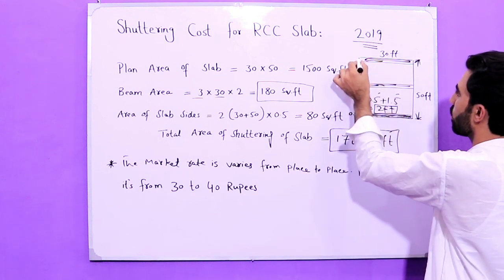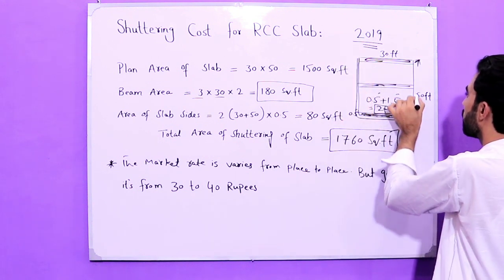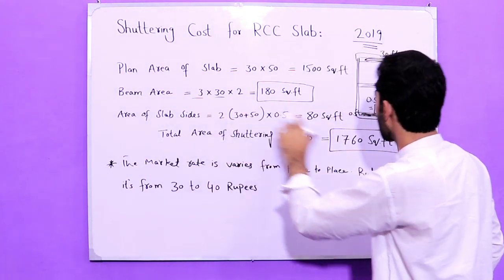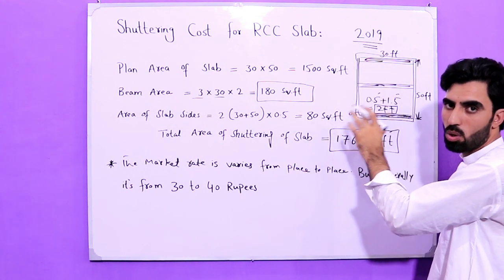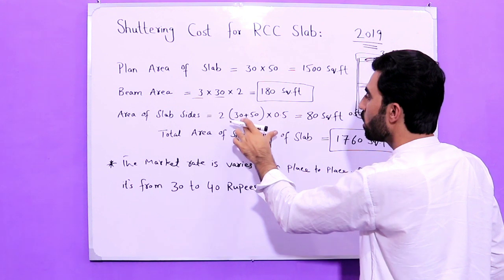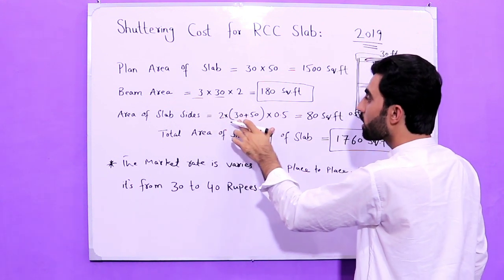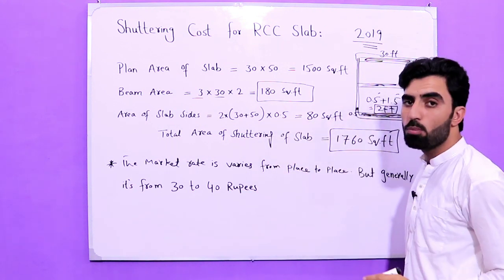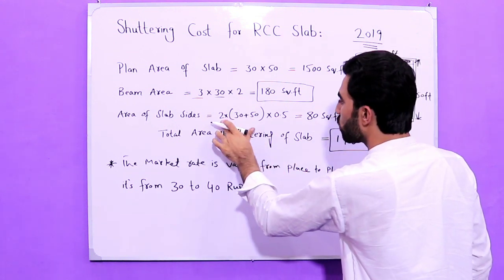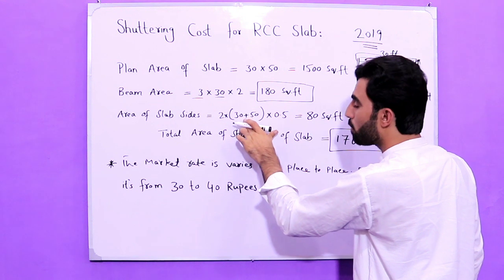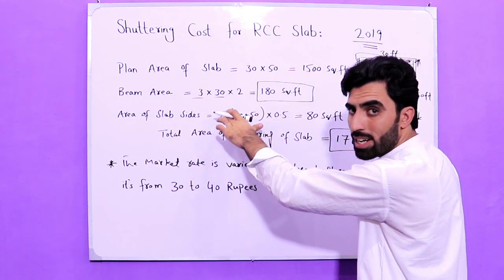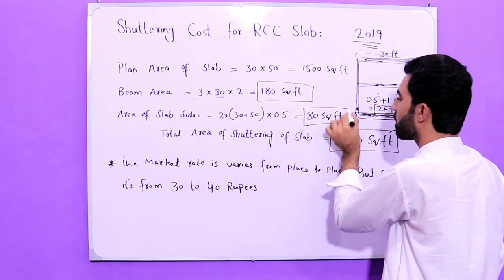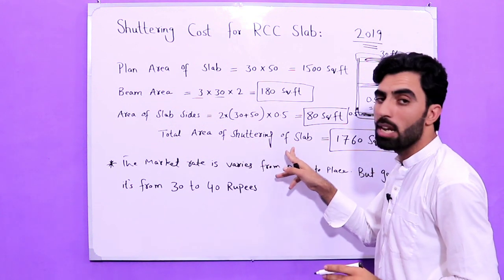Now for the area of the slab sides. As you can see, at the sides there is also formwork shuttering. Two directions — short and long — so we use 2 × (30 + 50), which is 2 × 80 = 160, then multiplied by 0.5 feet because the depth of the slab is 0.5 feet. So 160 × 0.5 = 80 square feet for the slab sides.